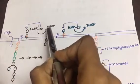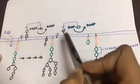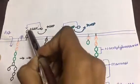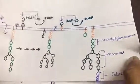And why is this so? Why is UDP for glucose and why is GDP for mannose? I will cover it in my next topic in my next video.